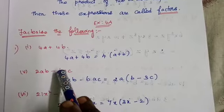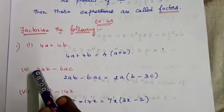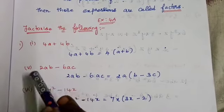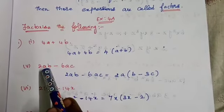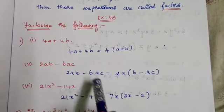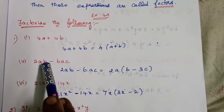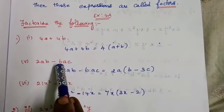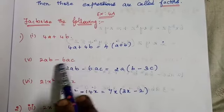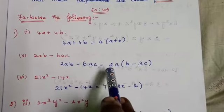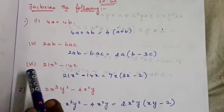Next: 2ab - 6ac. First look at the coefficients — 2 and 6 both have 2 as common, so take out 2. Then look at variables: both terms have 'a' as common, so take out 'a'. The common factor is 2a. The remaining of the first term is b, and in the second term, 6 divided by 2 is 3, so the remaining is 3c. Therefore: 2a(b - 3c).